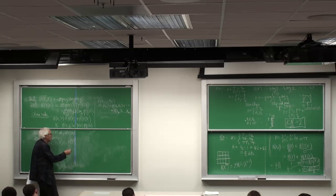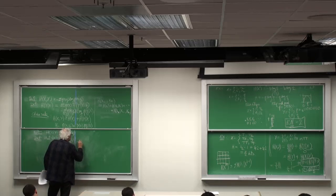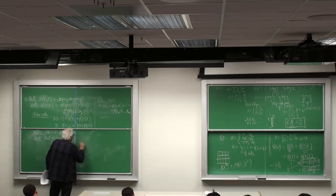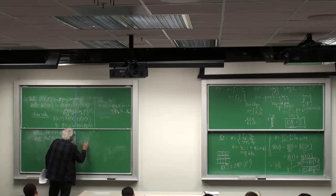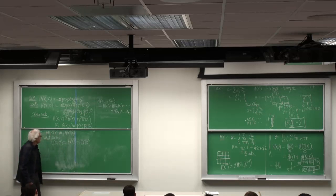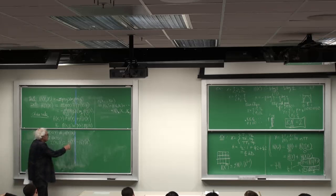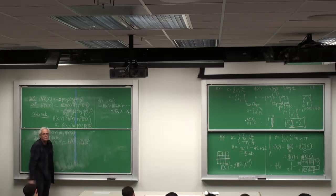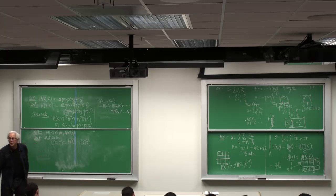Entropy H of Y minus the entropy given X. It's the amount of uncertainty in Y that's removed by the observation of X.